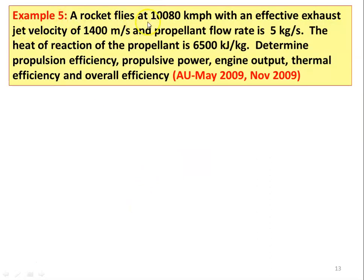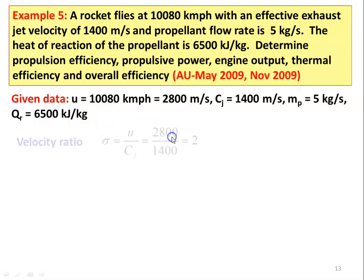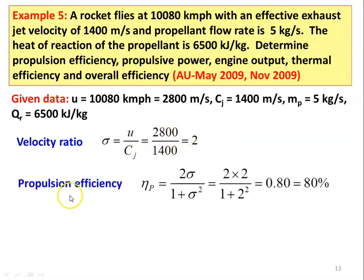Example number 5: A rocket flies at 10080 km/h with effective exhaust jet velocity of 1400 m/s, propellant flow rate 5 kg/s, and heat of reaction of the propellant 6500 kJ/kg. Determine propulsion efficiency, propulsive power, engine output, thermal efficiency, and overall efficiency. From May 2009 and November 2009. Given: U = 10080 km/h = 2800 m/s, Cj = 1400 m/s, MP = 5 kg/s, Qr = 6500 kJ/kg. Velocity ratio σ = 2800/1400 = 2. Propulsion efficiency ηp = 2×2/(1+4) = 0.8 = 80%.